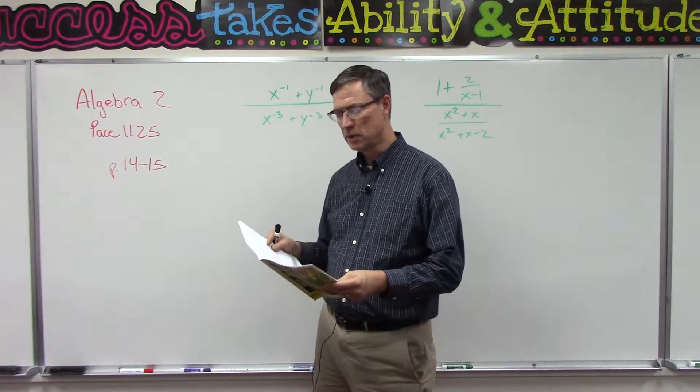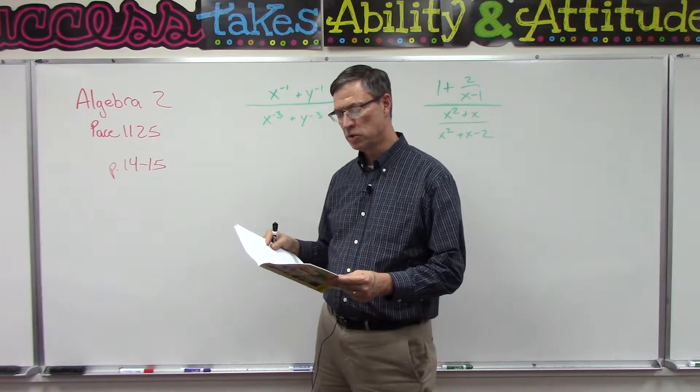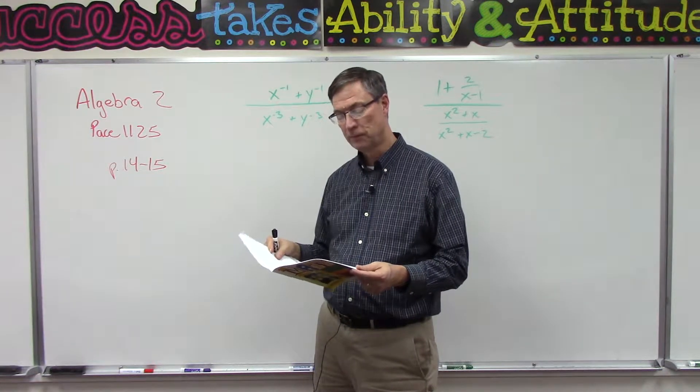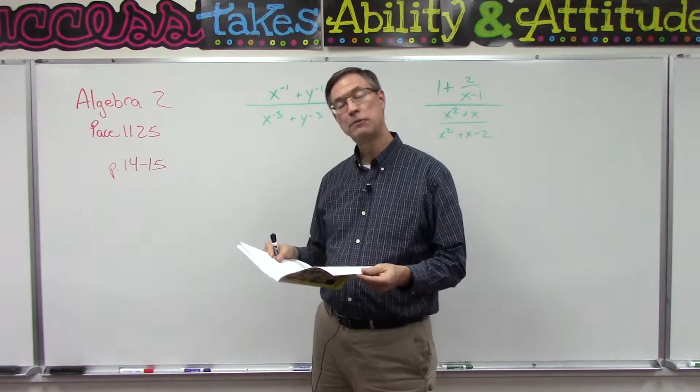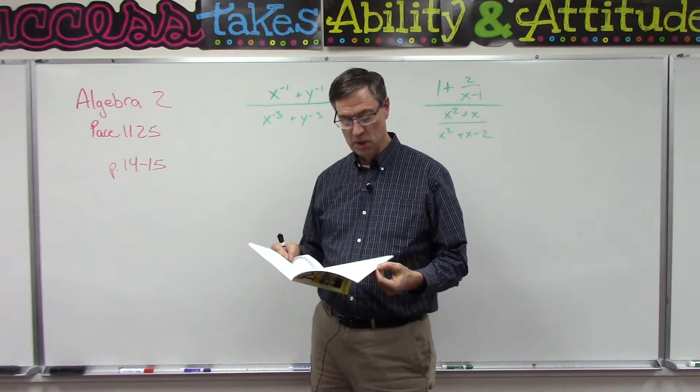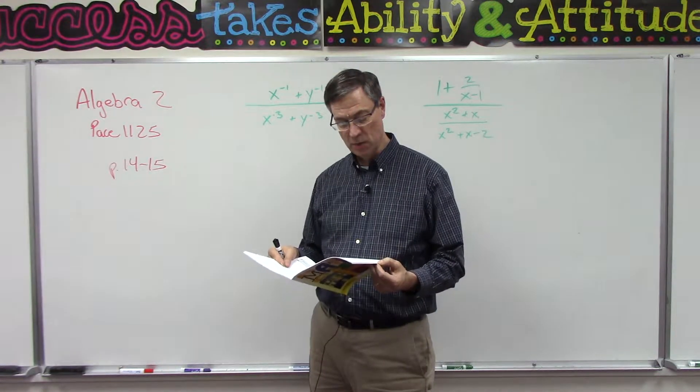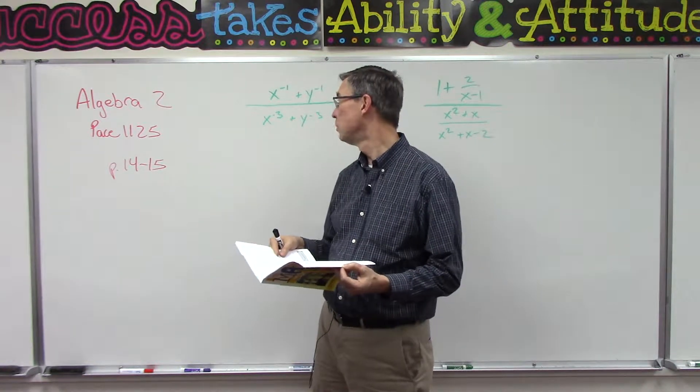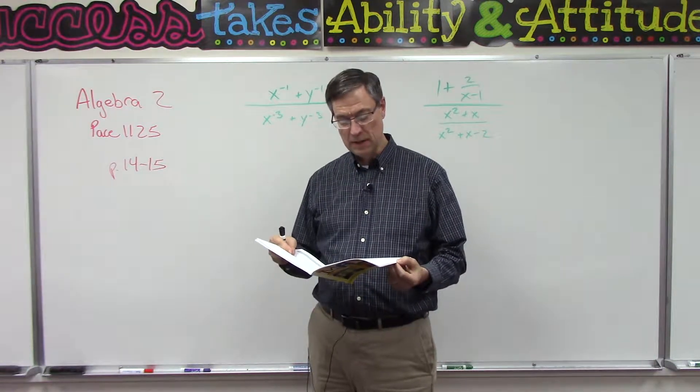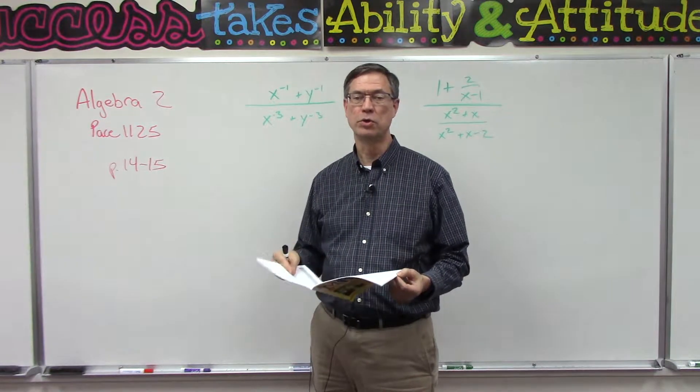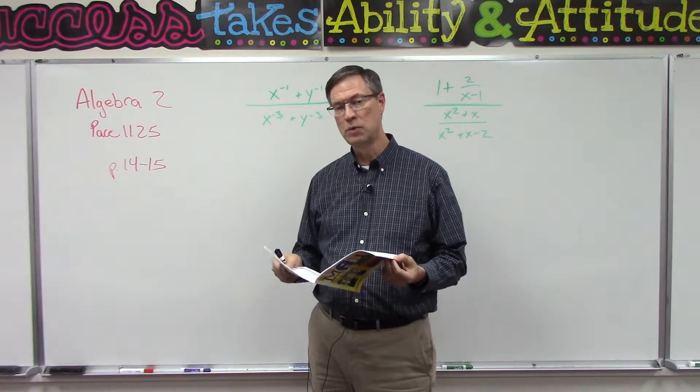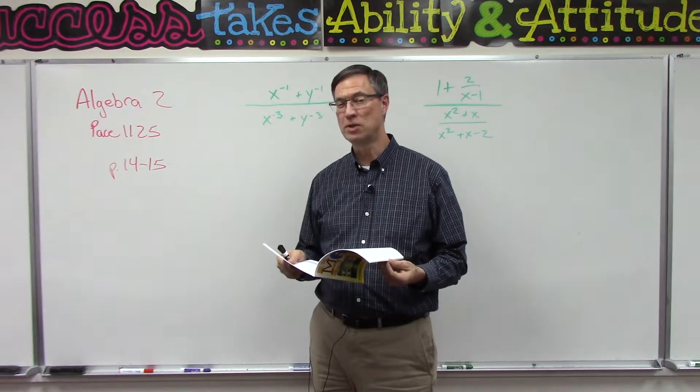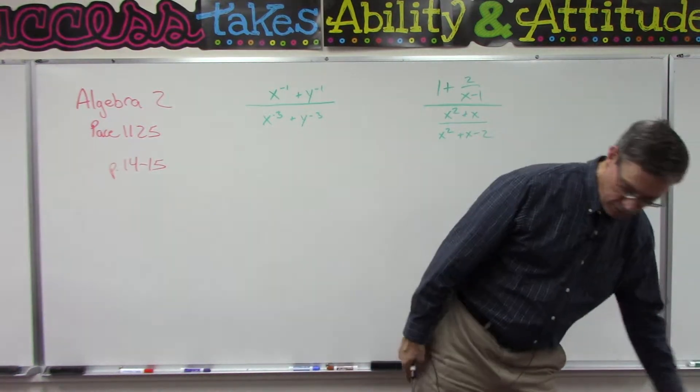In simplifying what do they call these fractions and equations? To simplify complex fractions, they gave us two methods. Method one where we find the least common denominator of both the top and the bottom and multiply through by that, and then the second method is called the quotient method. I'm going to help you get two of these really tough problems set up, and then you can finish them. There's a couple of tips I want to give you along the way here.